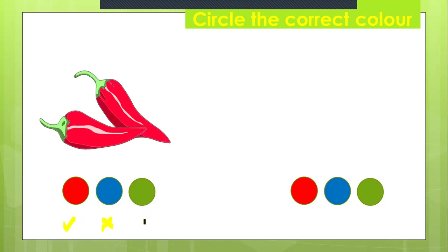And the third one is green, so it's also not. So we have to circle the red one. Red dots go with the red chilies.